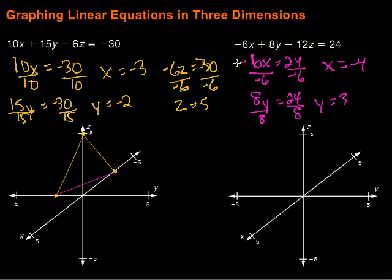And finally, I want to find the z-intercept, so I'm going to put in zero for x and y. So then I'm left with negative 12z equals 24. Divide that by negative 12 on both sides, and I end up with z being equal to negative 2.